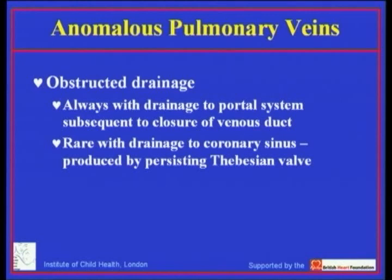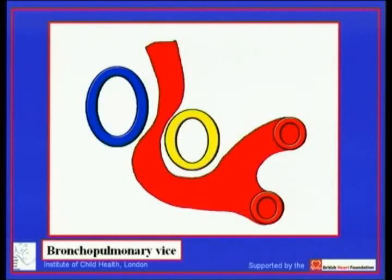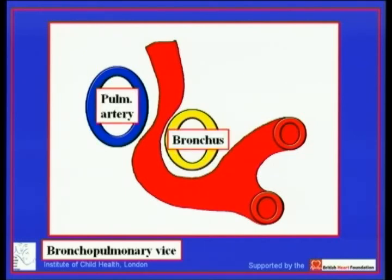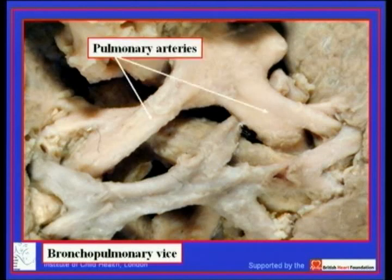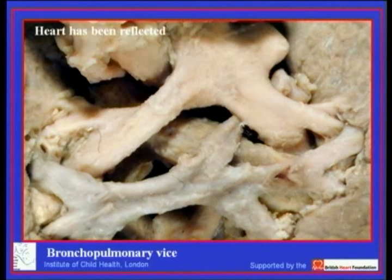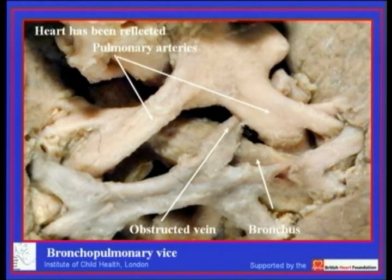Rarely, drainage to the coronary sinus with obstruction can be produced by a persisting thebesian vein. An interesting feature with supracardiac connection is the bronchopulmonary vice, where the venous channel passes between the pulmonary artery and the bronchus, producing a vice-like grip on the pulmonary venous channel. Here, after the Taussig maneuver with the heart reflected, we can see the pulmonary arteries, the bronchus, and the ascending channel trapped in the bronchopulmonary vice.